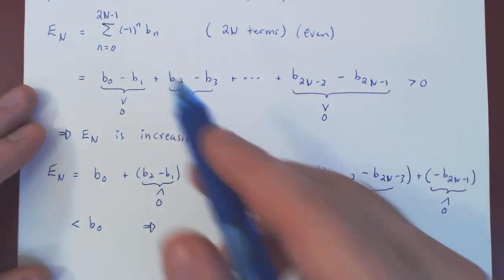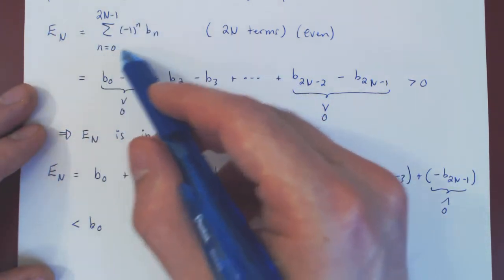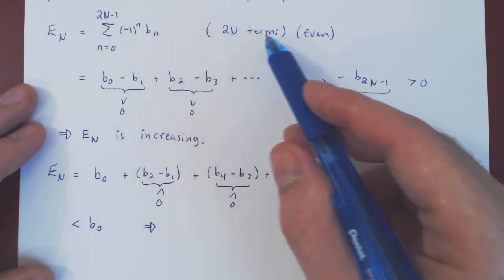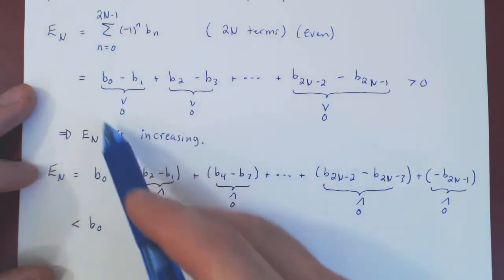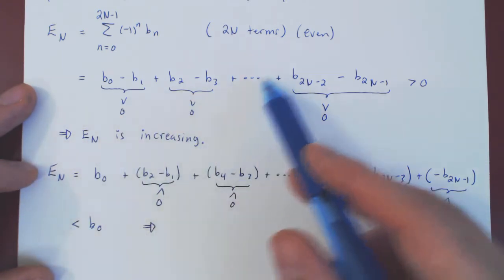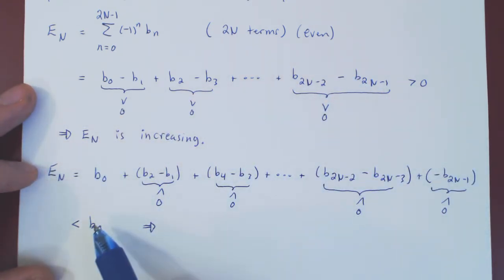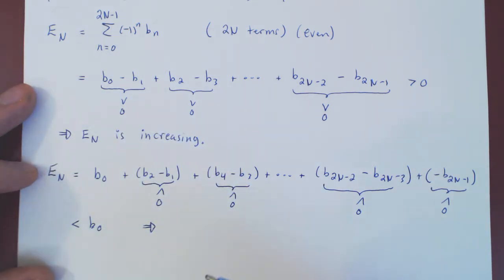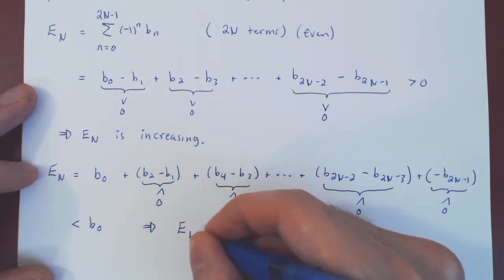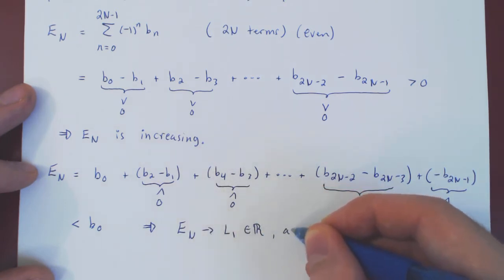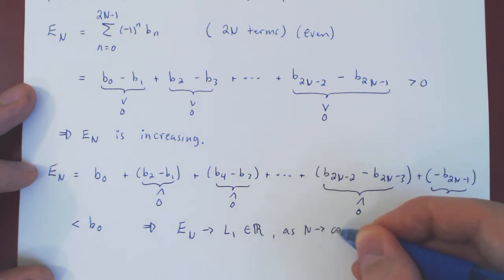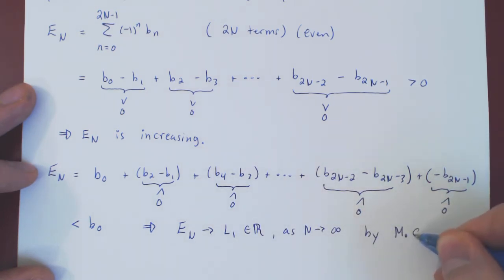So EN is an increasing sequence bounded above by B0. As N increases, EN becomes larger and larger, but it is bounded above, so at some point EN must hit the ceiling and converge. By the monotone convergence theorem, EN must converge to some real number, call it L1, as N approaches infinity.